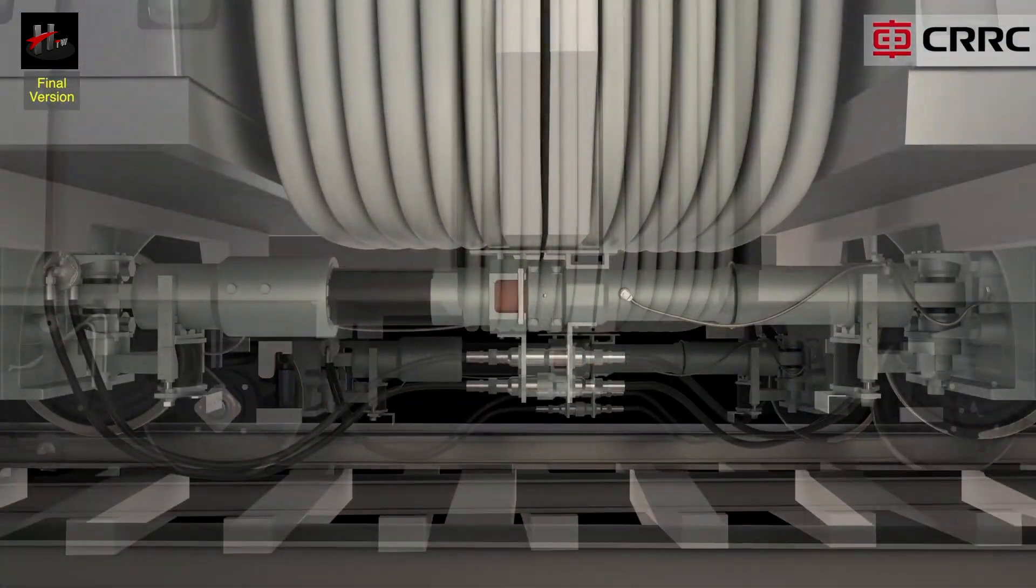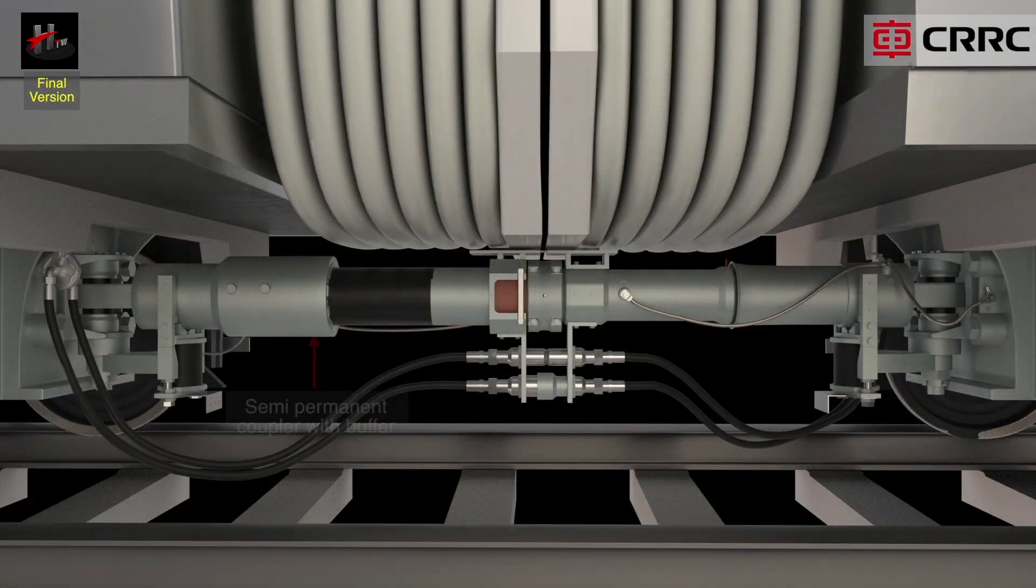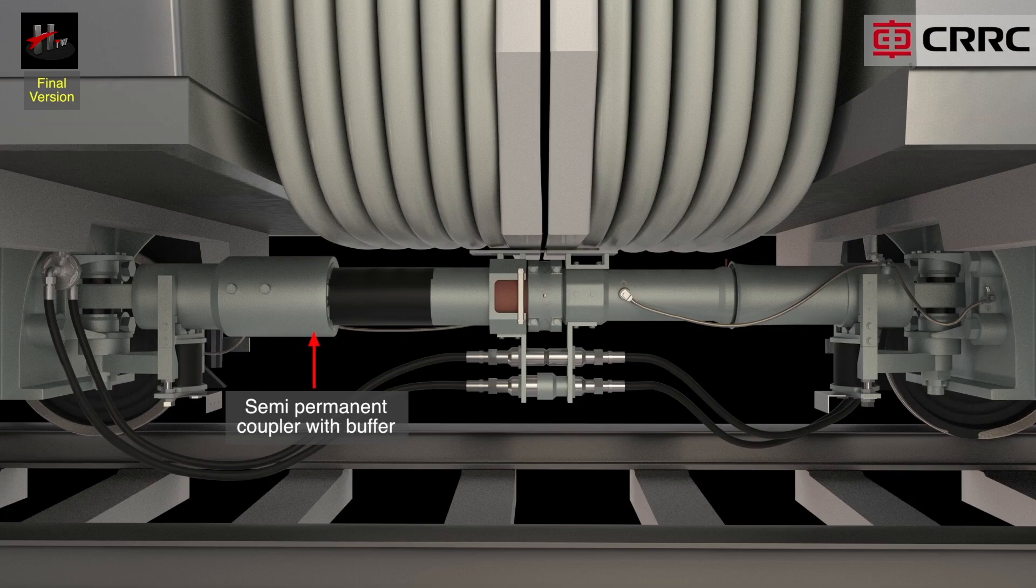There are two types of semi-permanent couplers: the semi-permanent coupler with buffer and the semi-permanent coupler with deformation tube.